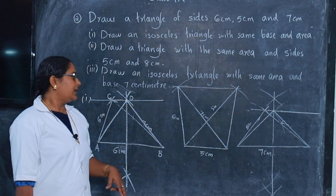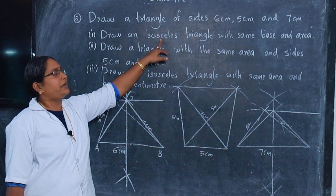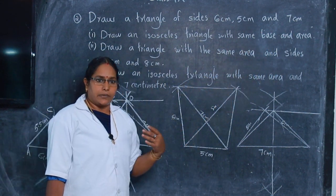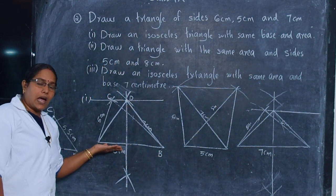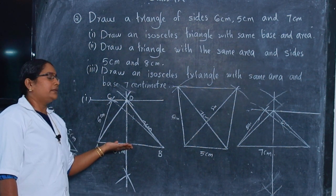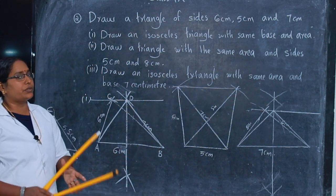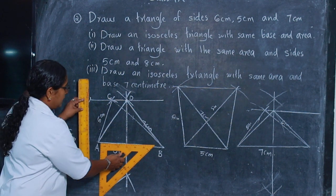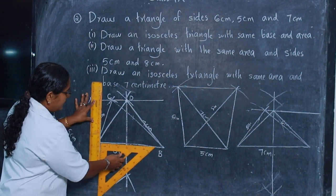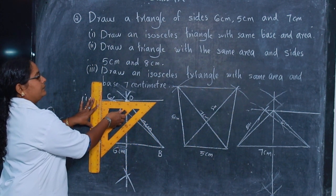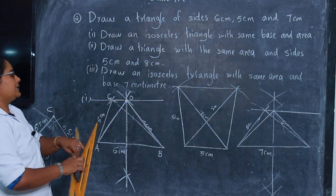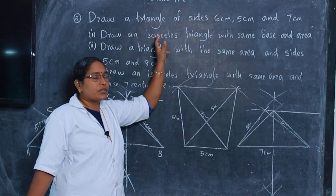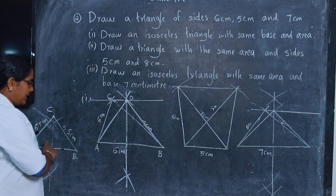This you have already studied in lower class. Now, with same base and area — two triangles have equal area when they share the same base and the third vertex lies on a parallel line. Therefore, we want to draw the parallel line first. Take a protractor or set square, fix at the base, fix the scale, and draw a parallel line through C. This line is parallel to base AB. Now for the isosceles triangle, draw the perpendicular bisector.